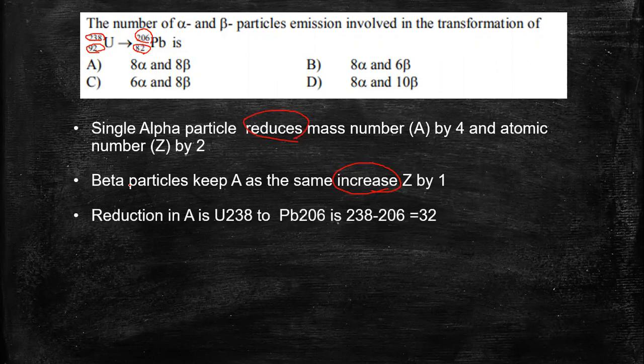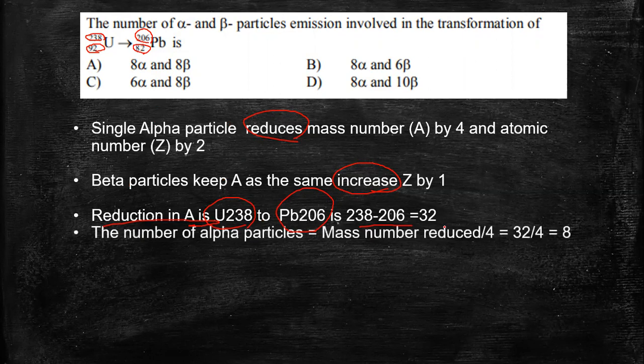So initially, let's consider the number of alpha particles emitted. For this, we can specifically consider the mass number because there is no change in the mass number when there is a beta particle emission. To find the number of alpha particles, let's consider the reduction in mass number.